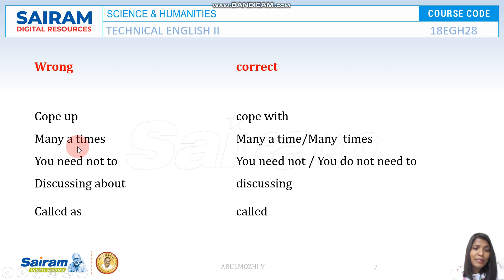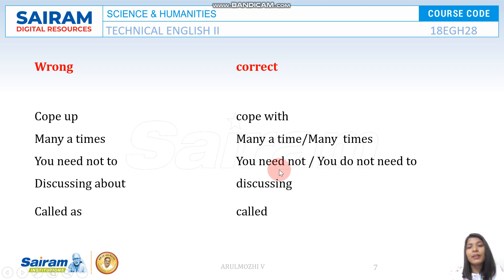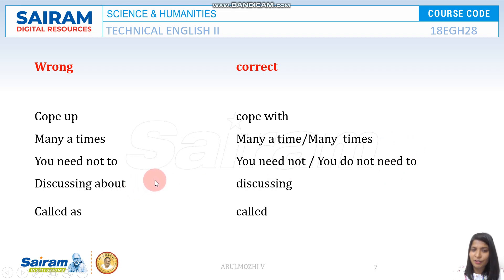There is no 'cope up' — the correct phrase is 'cope with.' 'Many a times' is also wrong; it should be either 'many a time' or 'many times.' Additionally, 'you need not to' is incorrect. You should say either 'you need not worry' or 'you do not need to worry.' 'You need not to' is a wrong usage.